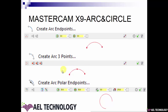Next is creating arc polar end points. Here you define either the outer angle or inner angle and specify the point. You will get an arc with that angle and the radius or diameter that you have defined.